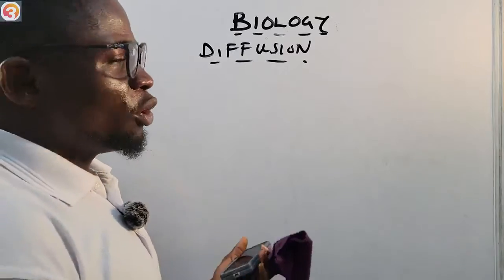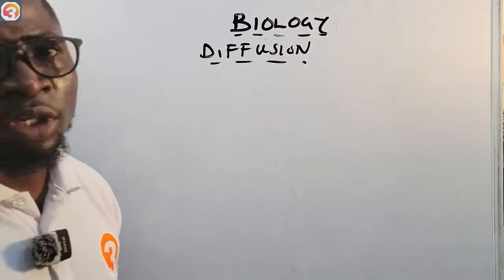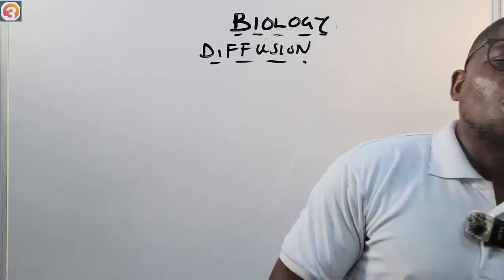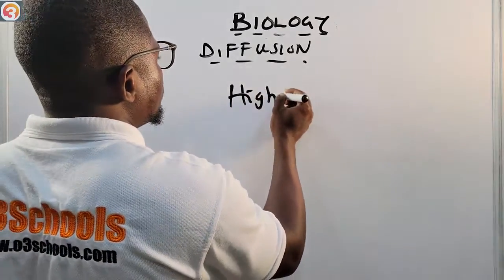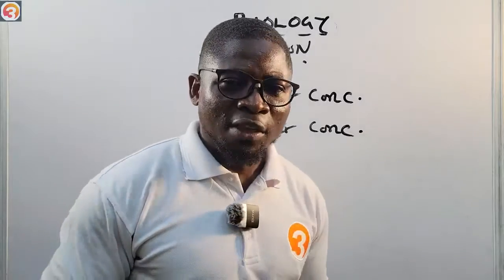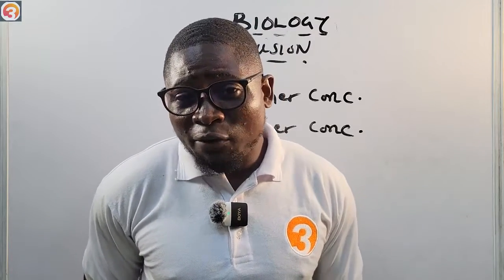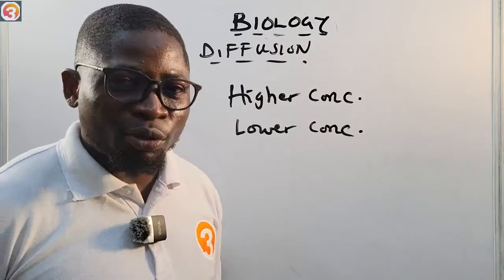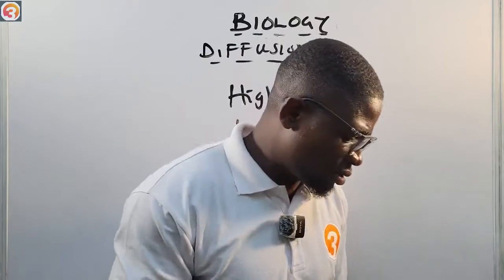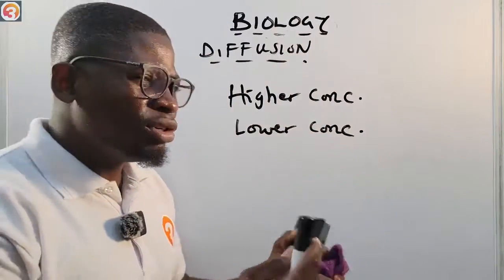Now let's talk about diffusion. Diffusion is the movement of molecules from a region of higher concentration to a region of lower concentration. For example, when you use deodorant, the scent moves from the region of high concentration — where you applied it — and diffuses outward to regions where the concentration is lower. That is diffusion: movement from a region of high concentration to a region of low concentration.